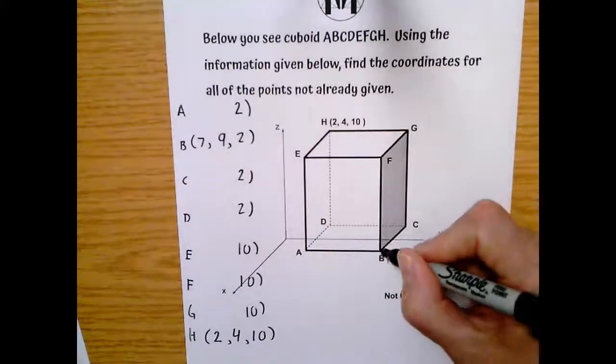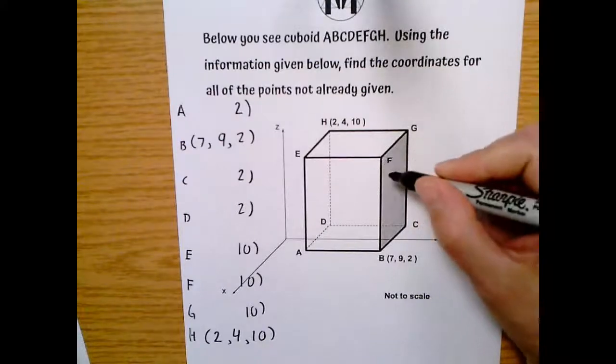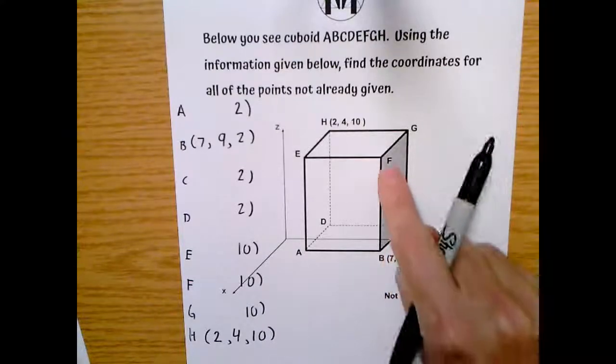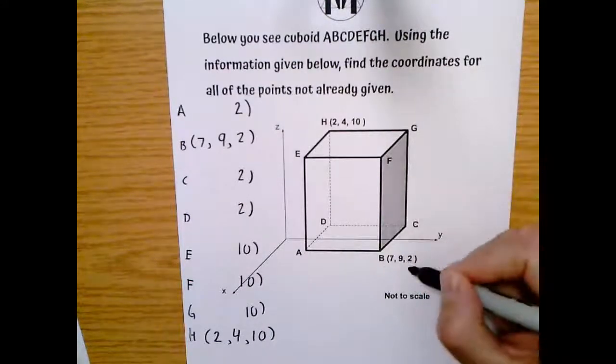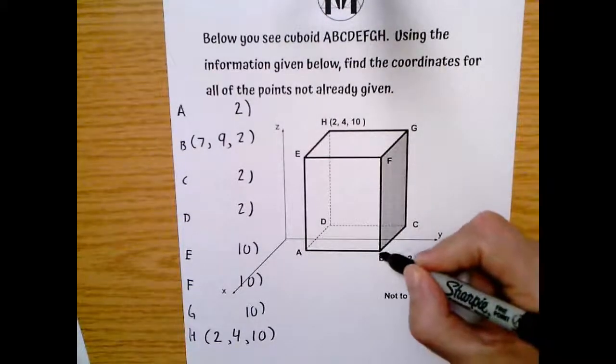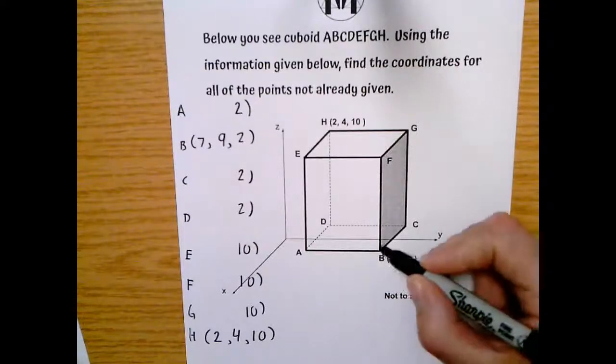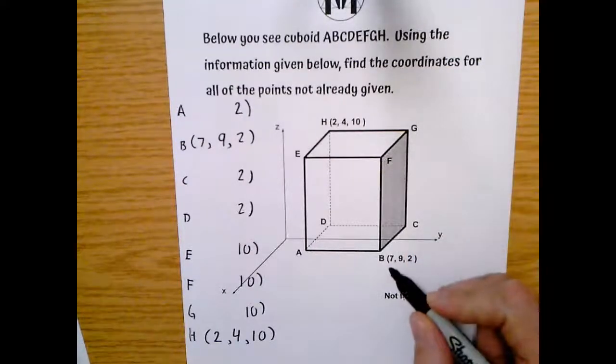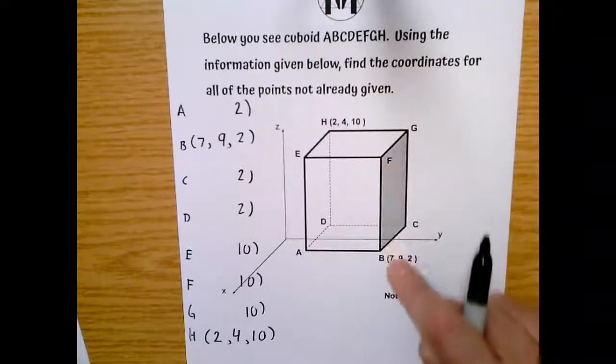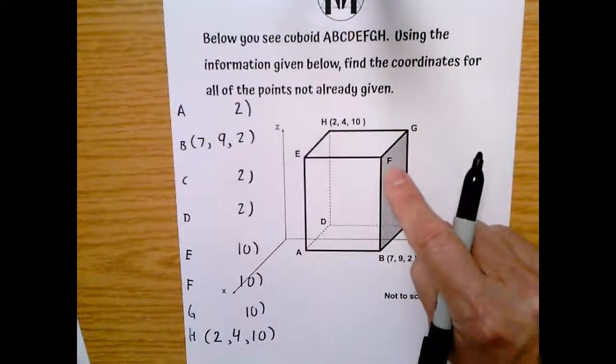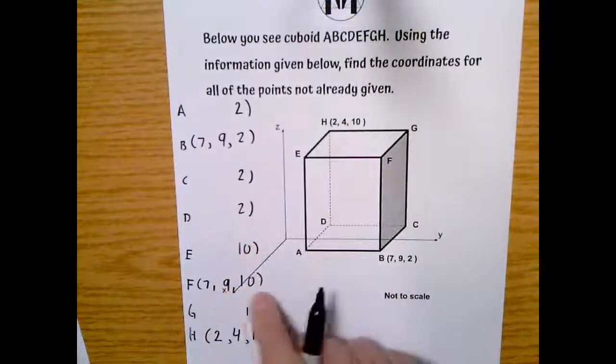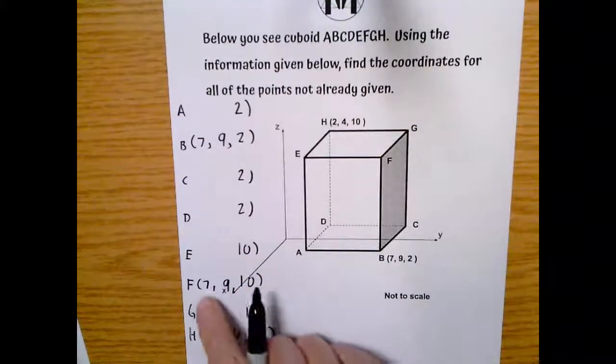So we know that this point B, it's pretty much exactly the same as F except for the only difference is F is at 10 and B is at 2. But that gives us a lot of information. So we know that if B is at 7 on the X and 9 on the Y, F is also at 7 on the X and 9 on the Y, and the only difference is the Z. So we know now that F is going to be 7, 9, 10.